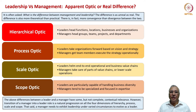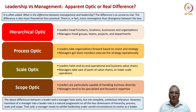The first is the hierarchical optic. Generally leaders head functions, locations, businesses and organizations, whereas managers head small groups, teams, projects and departments. The second optic of difference is the process optic. Leaders take organizations forward into the medium and long term through a stated vision and crafted strategy, whereas managers get their team members working on specific projects and departmental processes, contributing operationally.